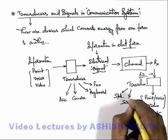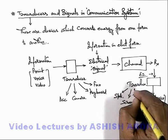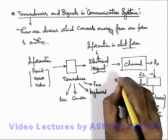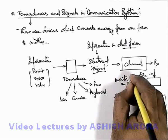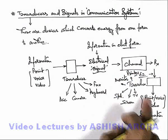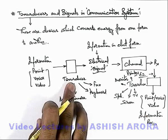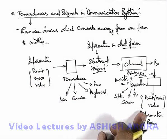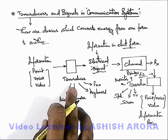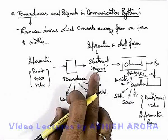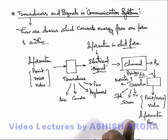Output transducers can be a screen, a television on which pictures can be displayed, a monitor, or a printer which can convert the electrical signal into an understandable form. So transducers play an important role in the overall communication system, because using transducers we can convert the understandable form of information into electrical form, and electrical form back into understandable form at the level of the transmitter and receiver.